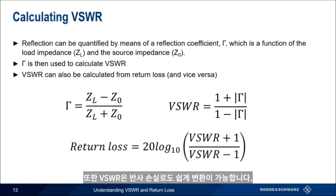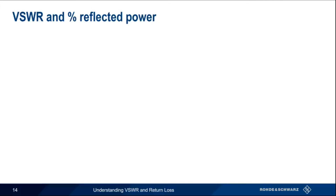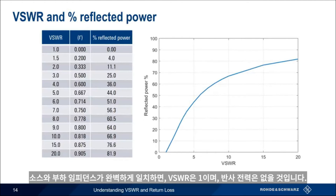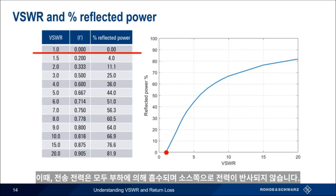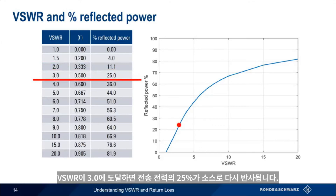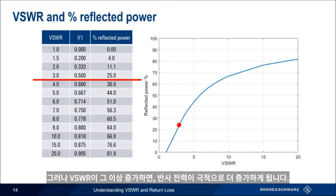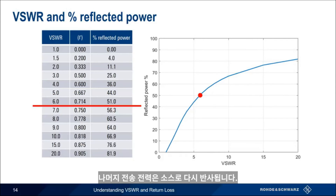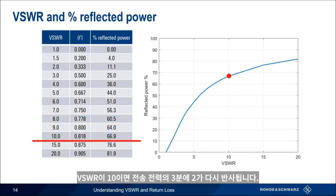Now that we know how to calculate VSWR, let's look at what happens as VSWR increases. If the source and load impedances are matched, then VSWR is 1 and we have no reflected power — all power is absorbed by the load. At a VSWR of 1.5, only 4% of the total power is reflected. By the time we get to a VSWR of 3, a quarter of the forward power is reflected back to the source; this is still acceptable for many applications. But the percentage of reflected power increases dramatically as VSWR increases further. At a VSWR of 6, only about half of the forward power is absorbed by the load, and at a VSWR of 10, two-thirds of the forward power is being reflected back.